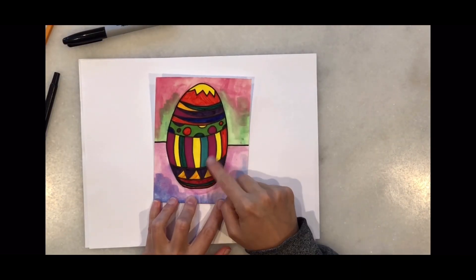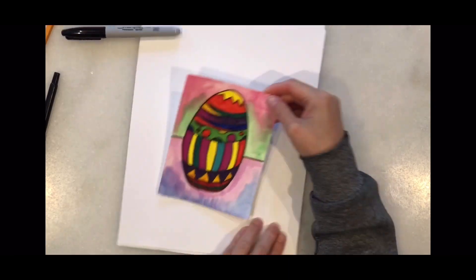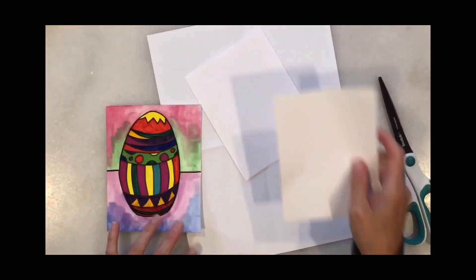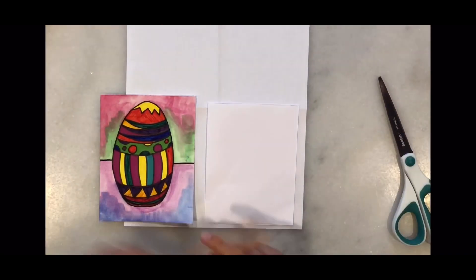In this drawing, I use markers for the inside of the egg, a black Sharpie for the lines, and watercolors for the background. Now I'm going to show you how to draw the egg.